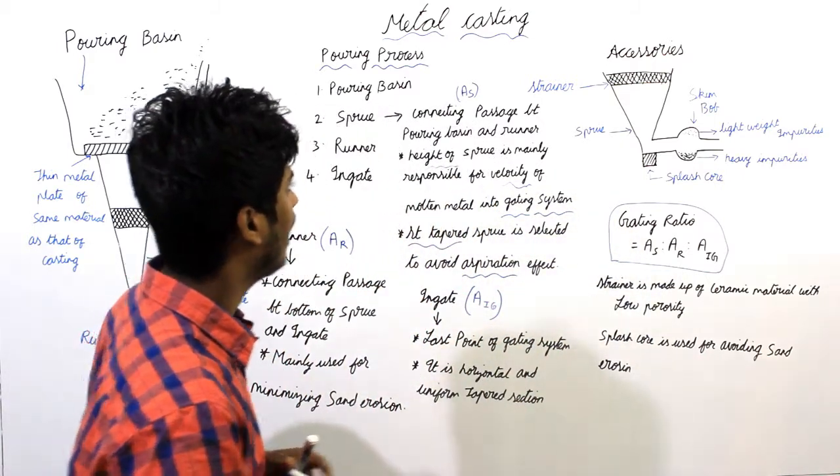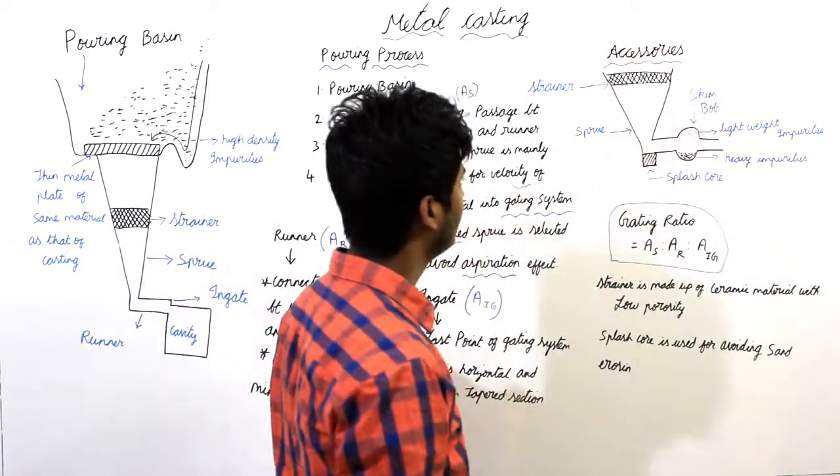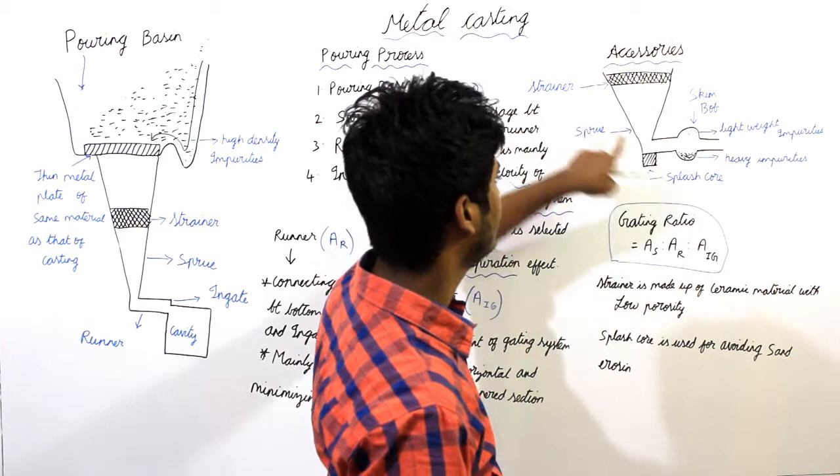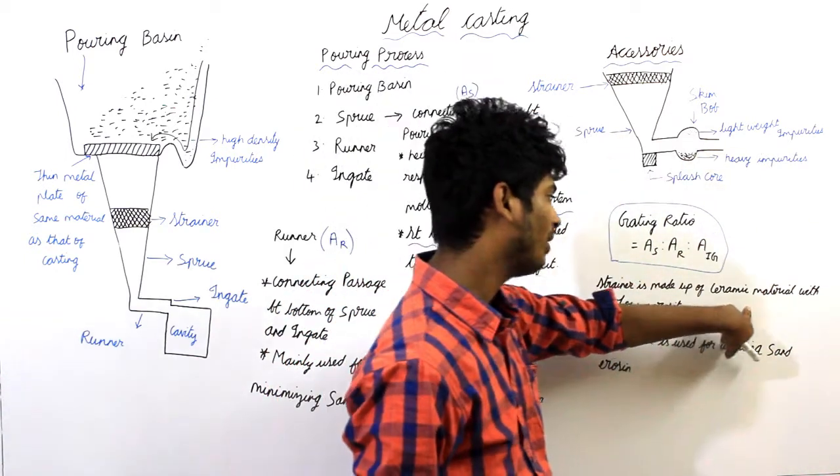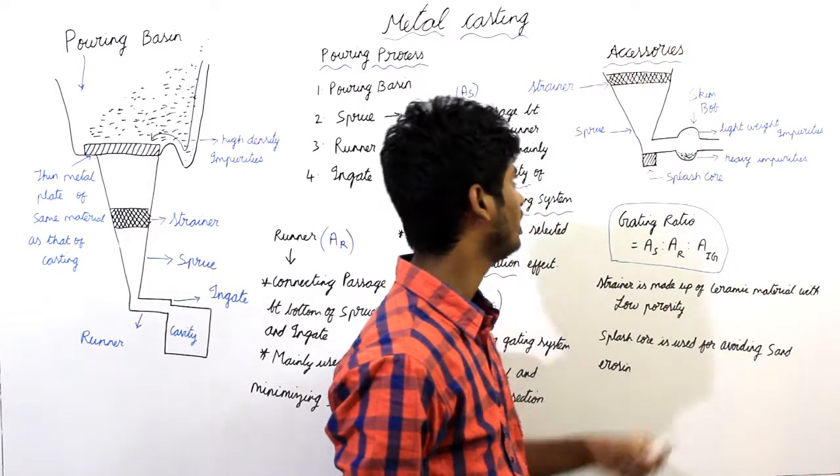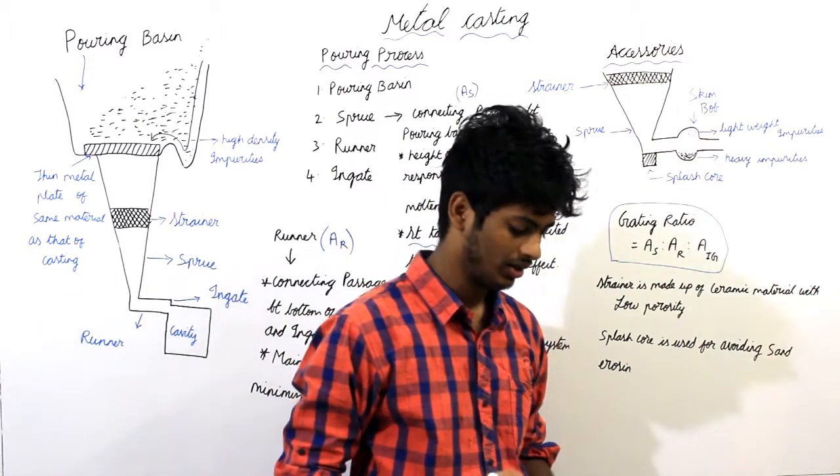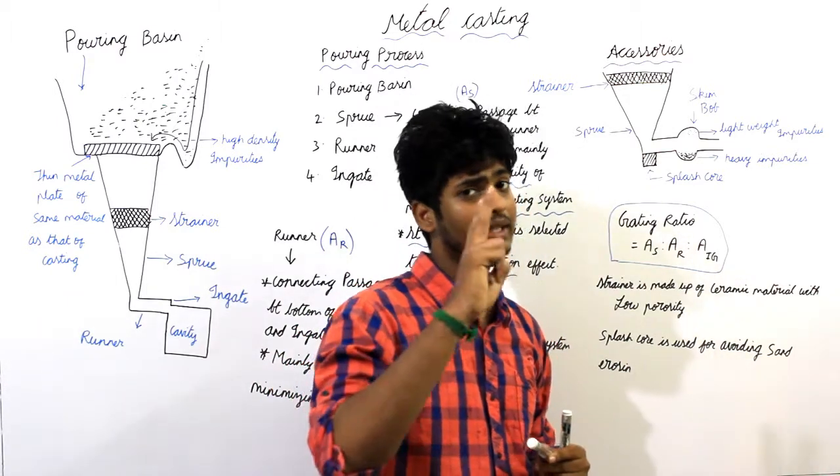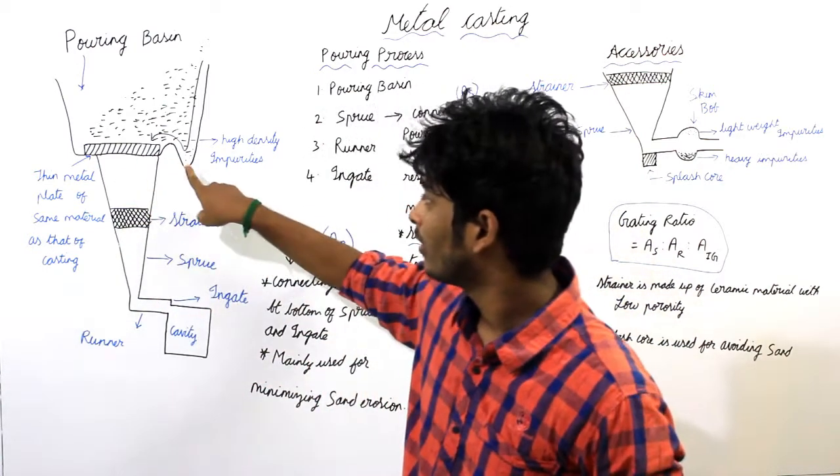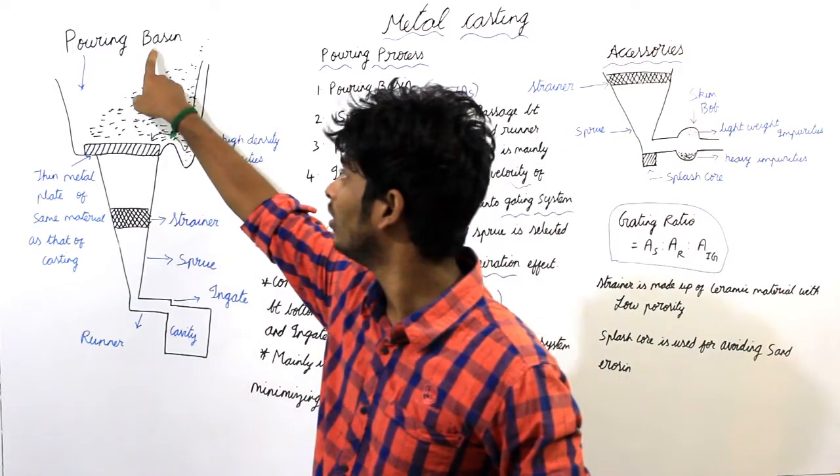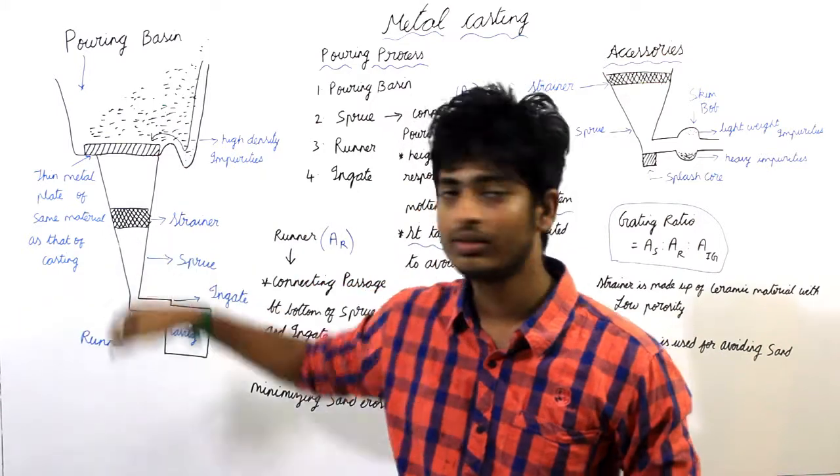And next part we have accessories. Accessories of gating system are strainer, splash core and skim bob. Strainer is made up of ceramic material with low porosity. Strainer is used to remove unwanted impurities in molten metal. It acts as a second stage medium to remove the impurities. First we are in the pouring basin to remove the impurities. This is first stage. Second stage is strainer.